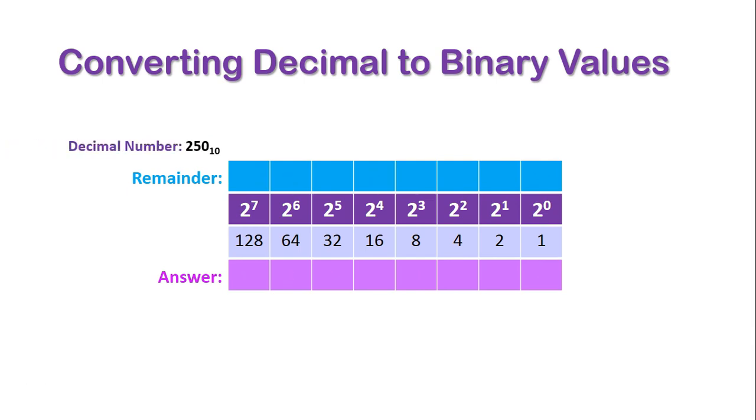So the final number we'll look at is 250. So we'll do a large number just so we can see all the numbers in action. So 128 does obviously go in in this case, remainder 122. 64 goes in once, remainder 58. 32 goes in once, remainder 26. 16 goes in once, remainder 10. 8 goes in once, remainder 2. 4 obviously doesn't go into 2, but 2 goes in perfectly, which gives us no more remainder, and there is our final number.